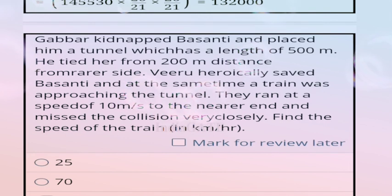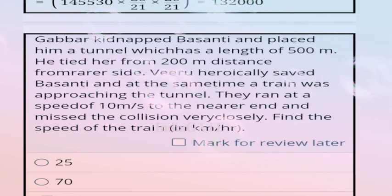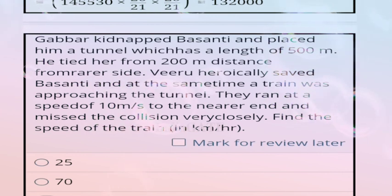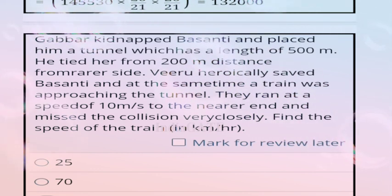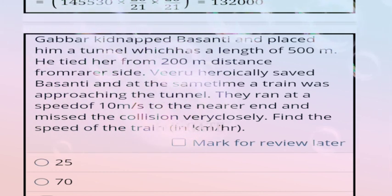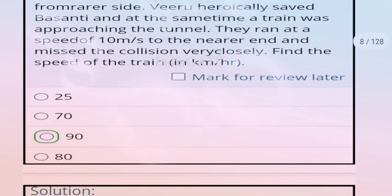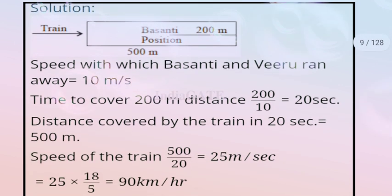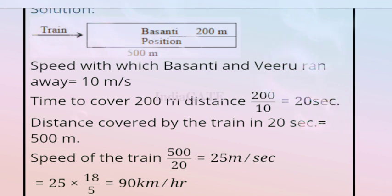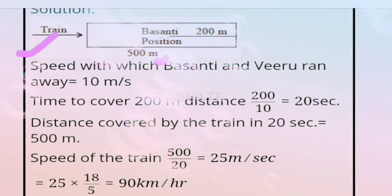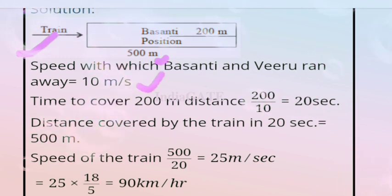Next question: Gubba kidnapped Vasanti and placed him in a tunnel of length 500 meters. He tried to flee from 200 meters distance. At the same time, a train was approaching the tunnel. They ran at a speed of 10 meters per second towards the nearer end and narrowly missed the collision. Find the speed of the train in km/h. The correct answer is option C, 90.